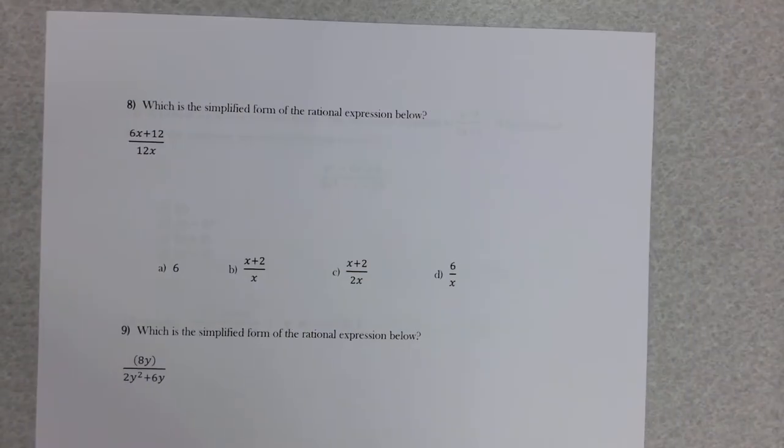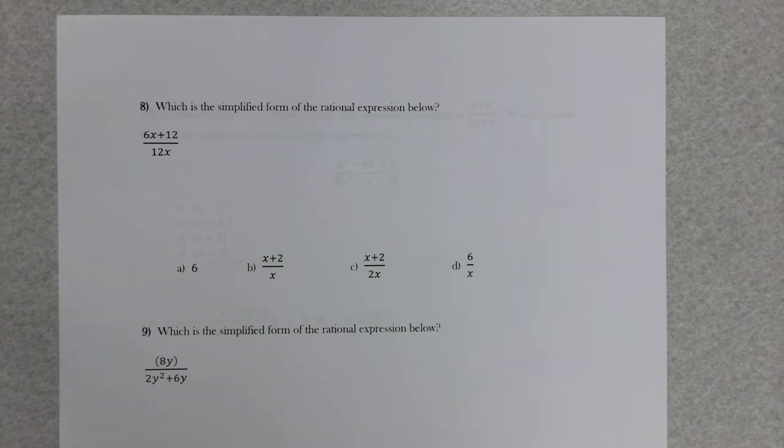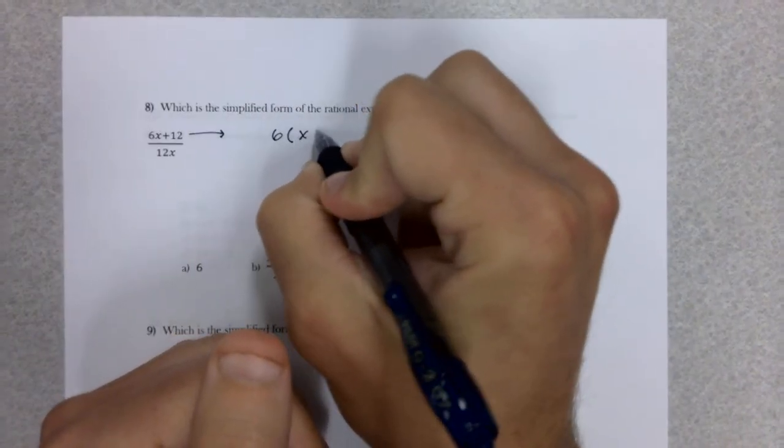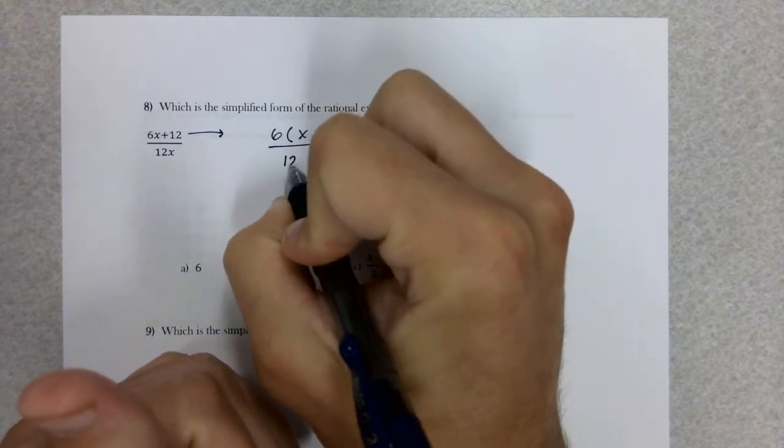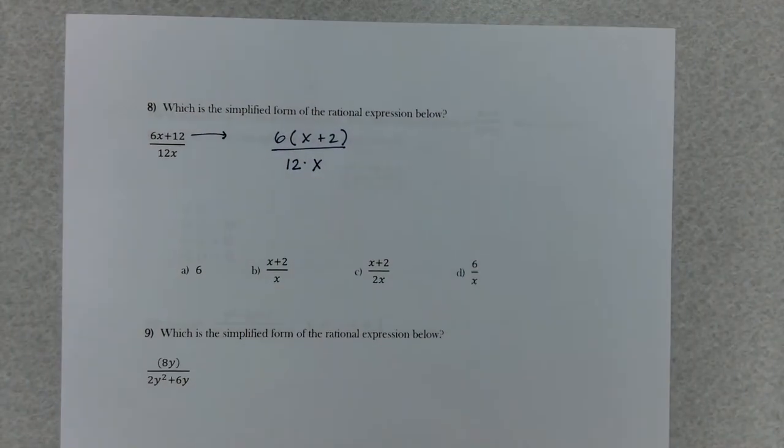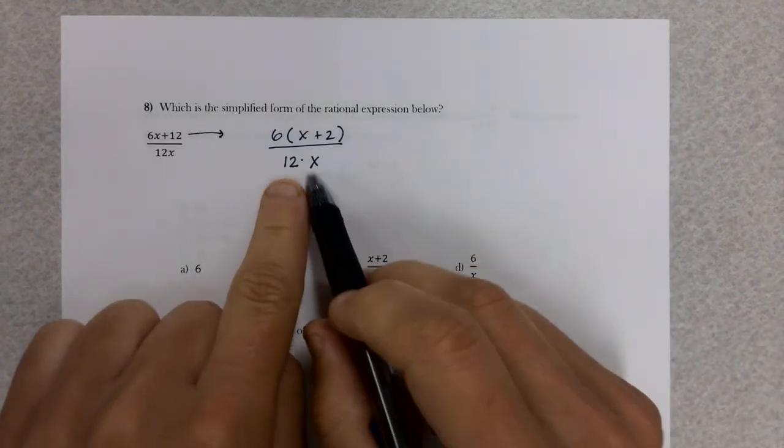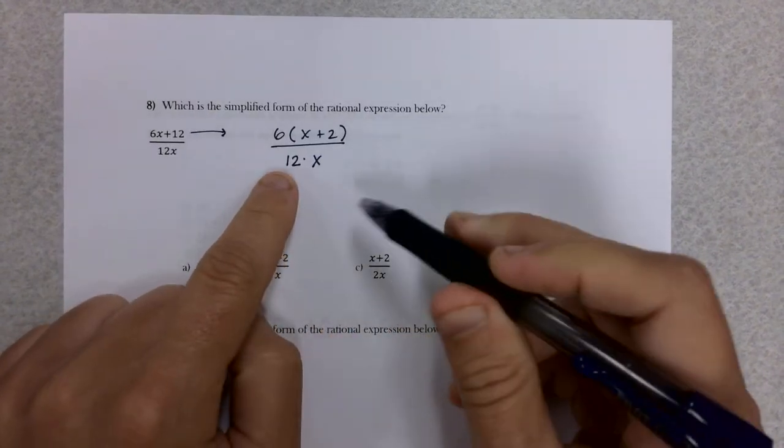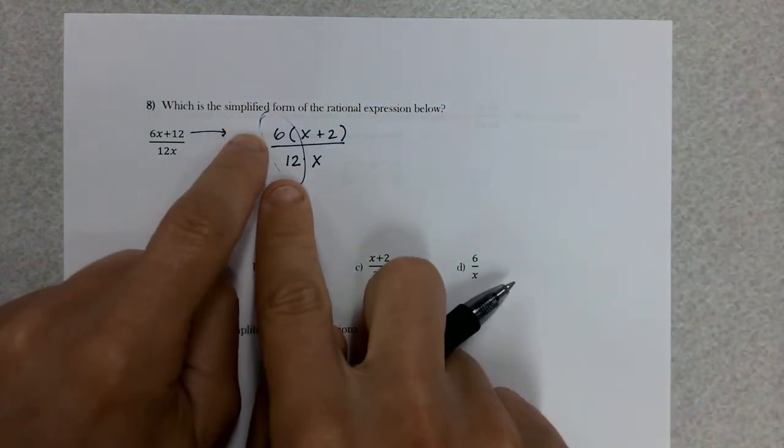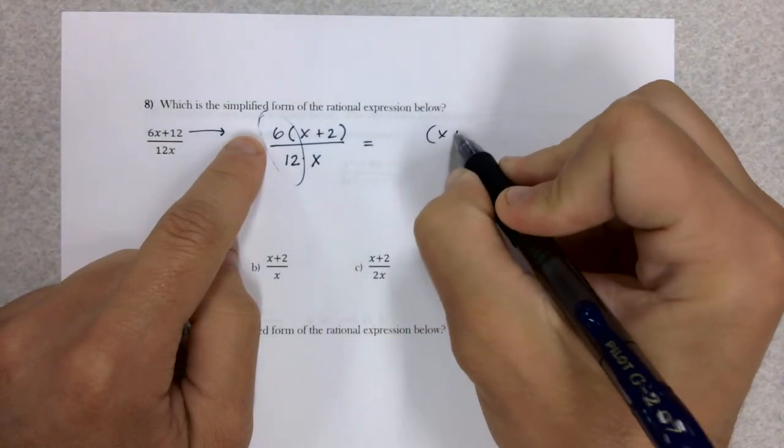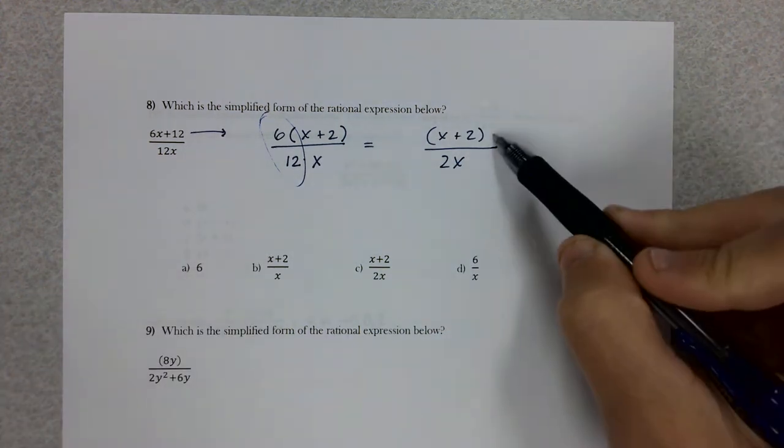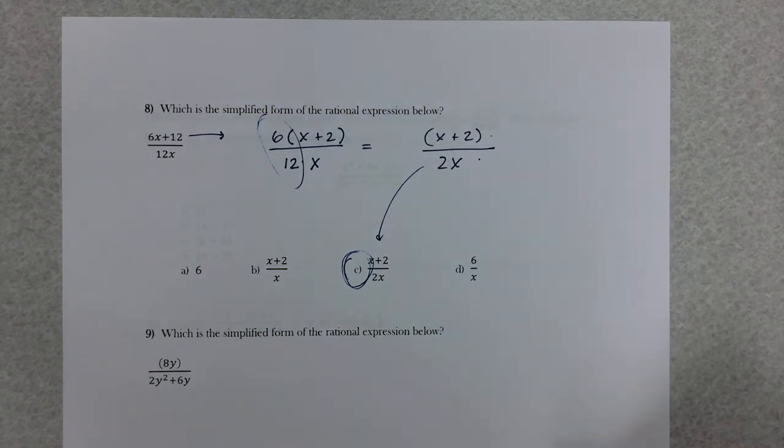Then we get into these things called rational expressions. I call them algebra's fractions. Fractions with variables, and just like any other fraction we always try to simplify. Does the numerator factor? Yes, there's a GCF of a 6. The denominator doesn't really factor in the typical way, but I can split that up into a 12 and an x because together 12 times x is 12x. Hopefully it helps you notice that these two things can simplify. I can simplify 6 over 12 and reduce that to 1 over 2. Now I have something that matches one of my answers.